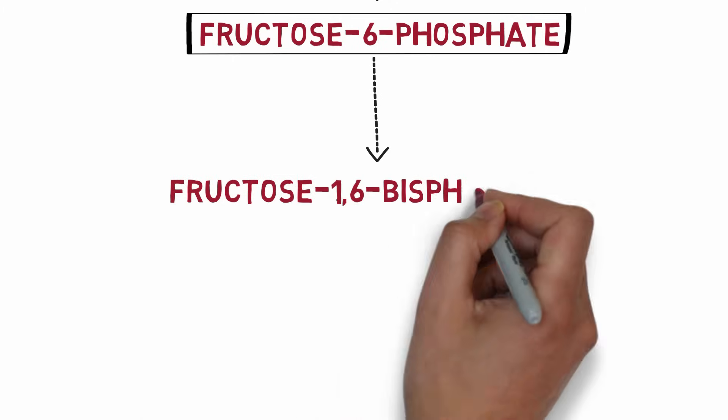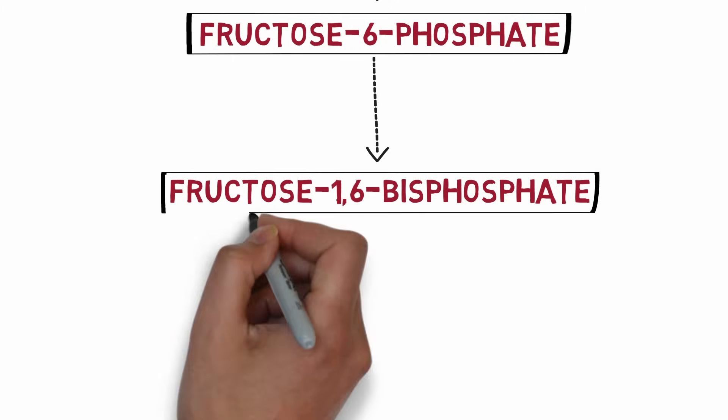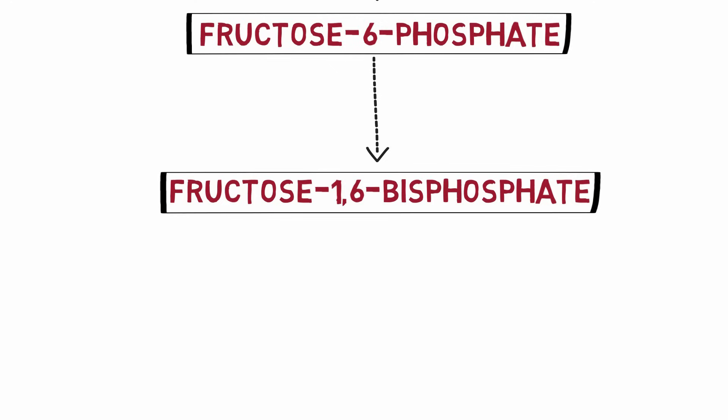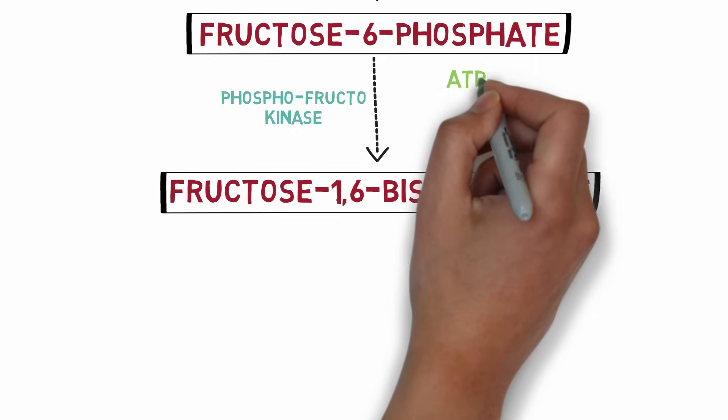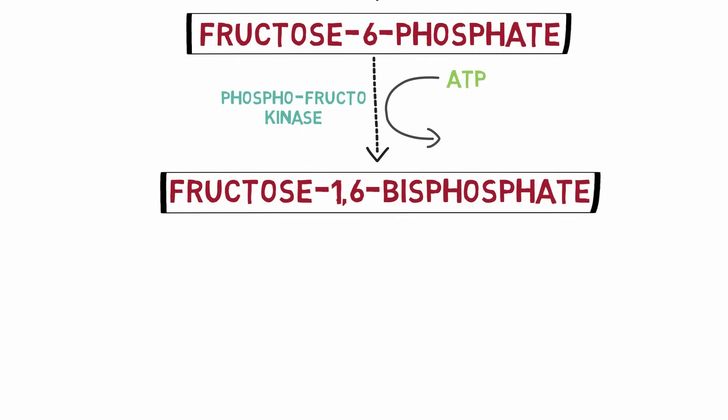In the next step, fructose 6-phosphate is converted to fructose 1,6-bisphosphate by the addition of another phosphate group at the first carbon of the fructose ring. This reaction is catalyzed by the enzyme phosphofructokinase, another kinase enzyme, which transfers a phosphate from ATP to fructose 6-phosphate. Again, ATP is converted to ADP, so another ATP is utilized.